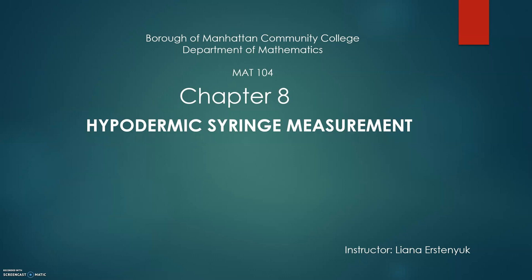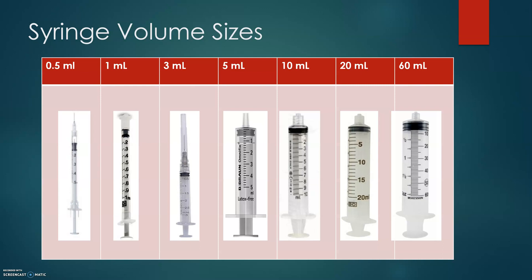Chapter 8: hypodermic syringe measurement. Syringe volume sizes commonly used in medical practice are 0.5 milliliter, 1 milliliter, 3 milliliter, 5 milliliter, 10 milliliter, 20 milliliter, and 60 milliliter, as shown in the chart on screen. Usually the capacity from 0.5 milliliter to 3 milliliter syringes are called small capacity syringes, and starting from 5 milliliter and up there will be the larger capacity syringes.